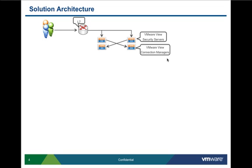The view security server resides in the DMZ and provides a layer of security for connections coming in from outside the network. Each security server is paired to a view connection server. Depending on your environment and security requirements, you might need one pair, two pairs, or none. You can have a standard set for external connections, one for contractors with RADIUS integration, or if you don't expect external connections at all, sessions can terminate directly into one of the connection managers. From a best practices standpoint, it is recommended to have more than one connection manager for high availability, and ensure connection manager VMs follow anti-affinity rules.